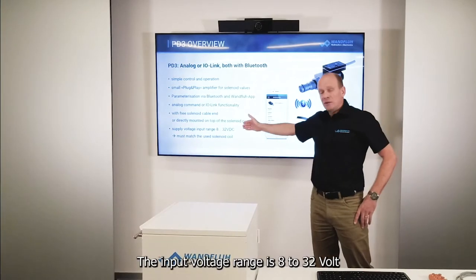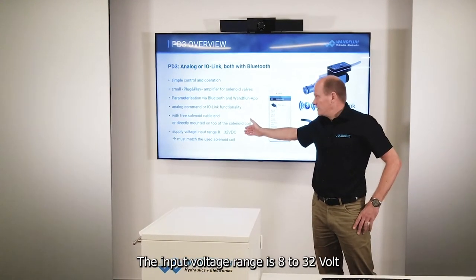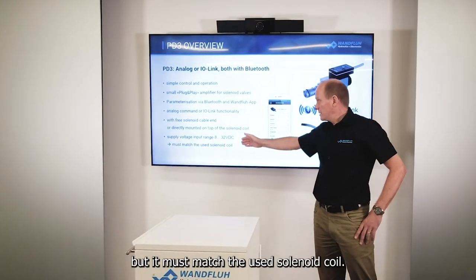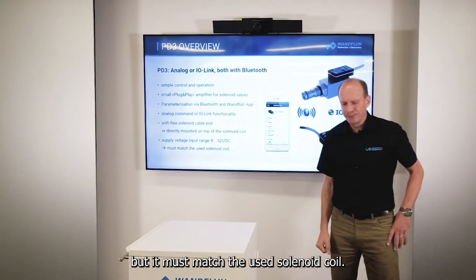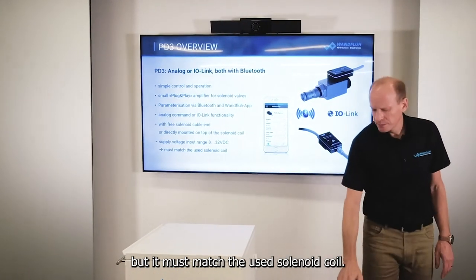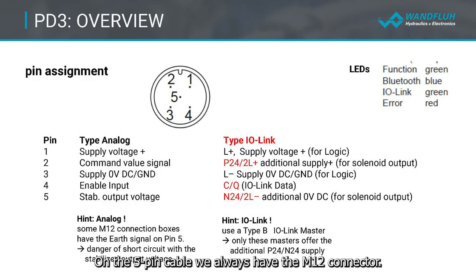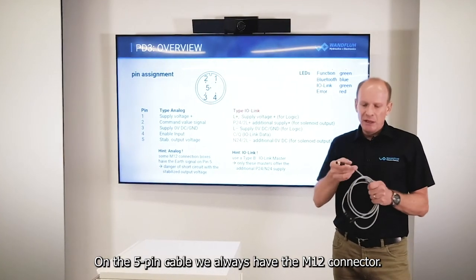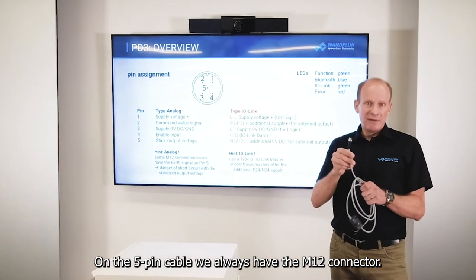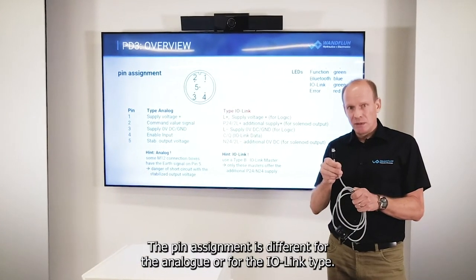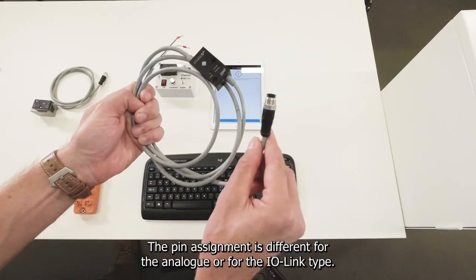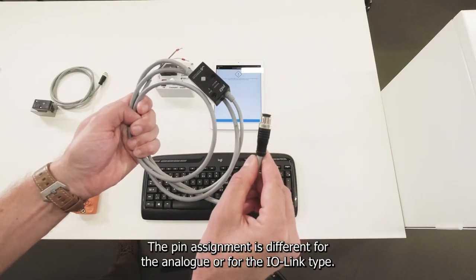The input voltage range is 8 to 32 volts, but it must match the used solenoid coil. On the 5-pin cable of the PD3 we always have the M12 connector. The pin assignment is different for the analog or for the IO-Link type.